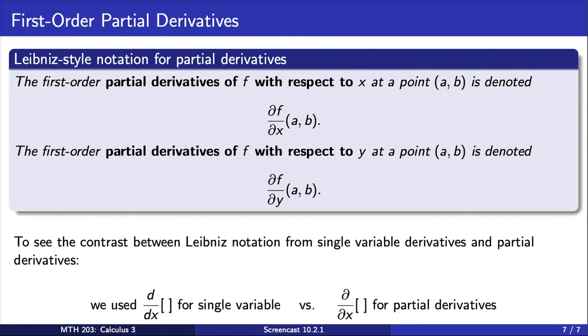To see the contrast between the familiar Leibniz notation for single-variable derivatives and now for partial derivatives, we can see this here, comparing the two notations side by side. The difference in notation helps us understand what sort of derivative we are looking for.